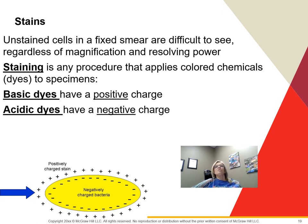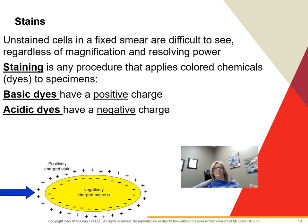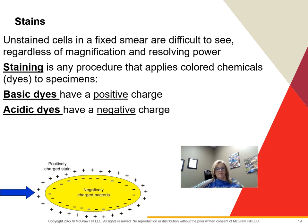Bacteria have many negatively charged substances and often attract a basic dye. Staining applies colored chemicals or dyes to specimens — it's really hard to see cells without stains no matter how magnified they are. A basic dye has a positive charge and sticks to a negatively charged cell. An acidic dye has a negative charge and sticks to a positively charged cell.